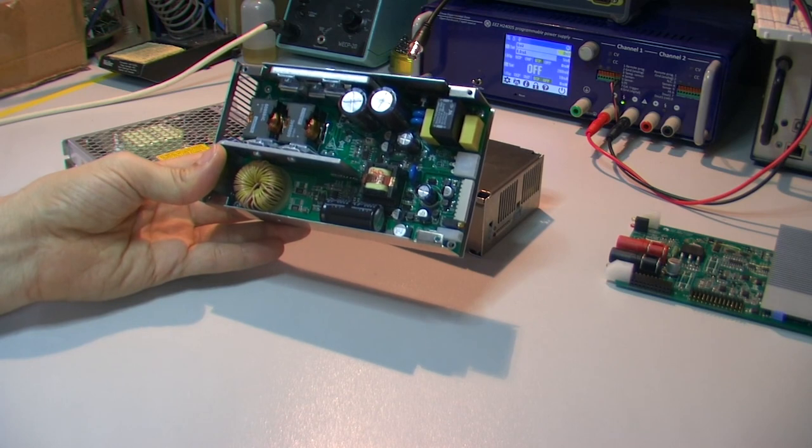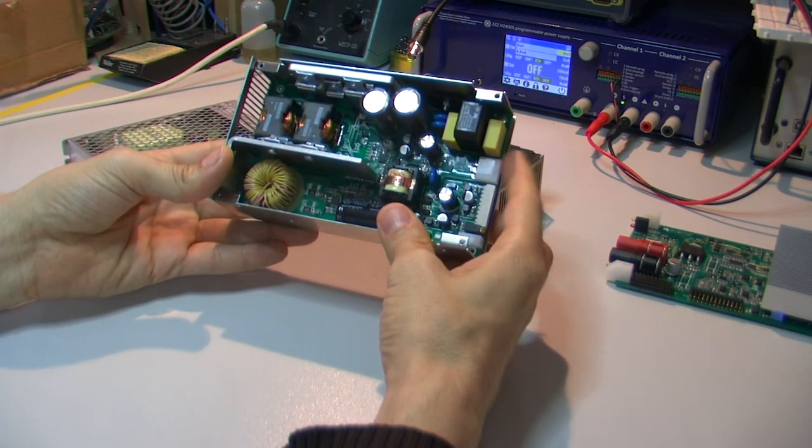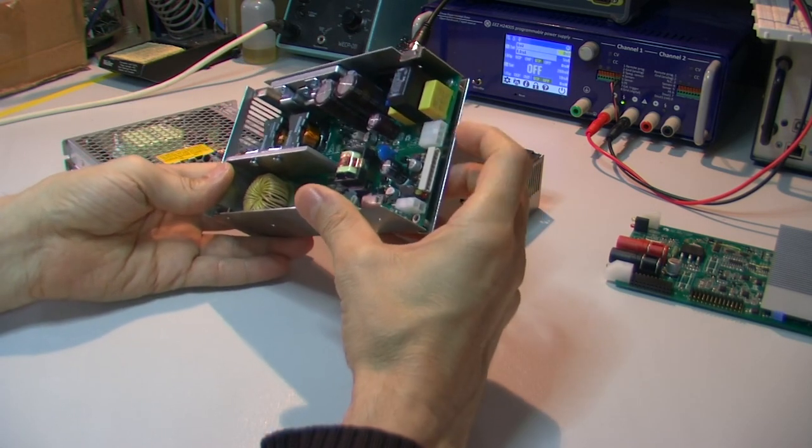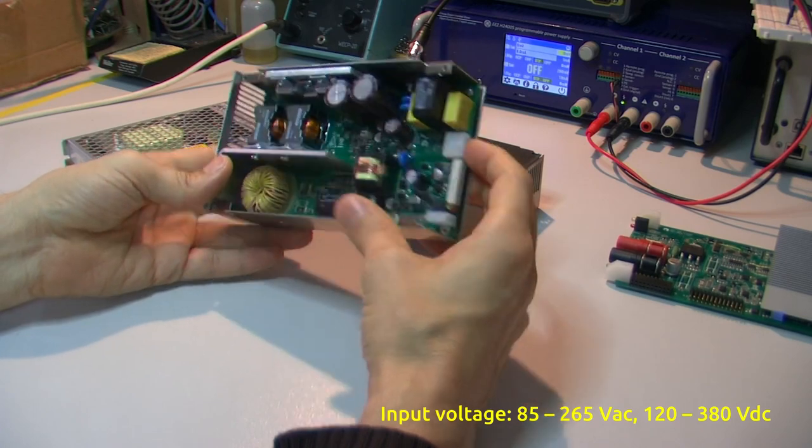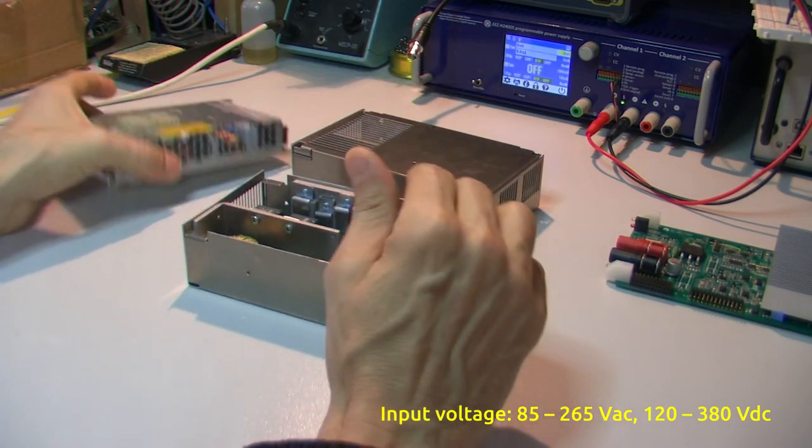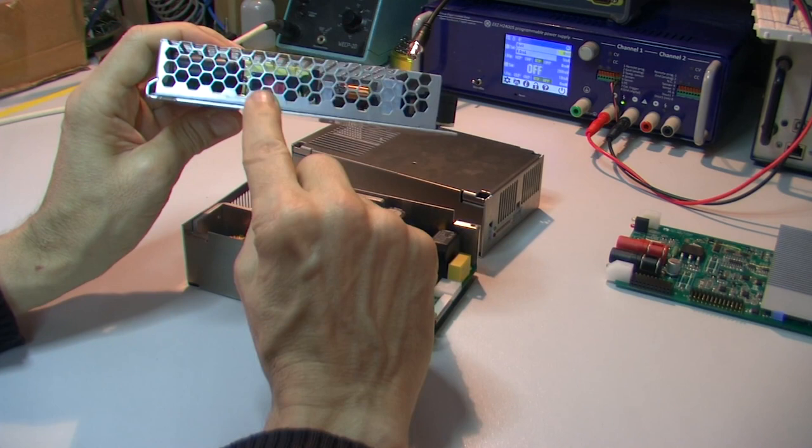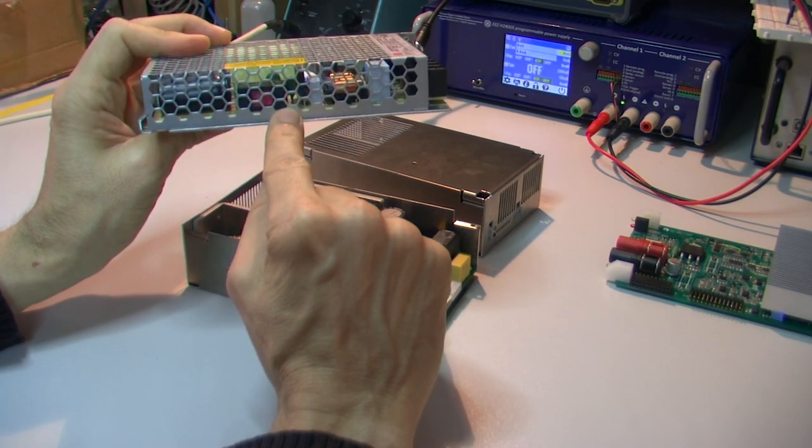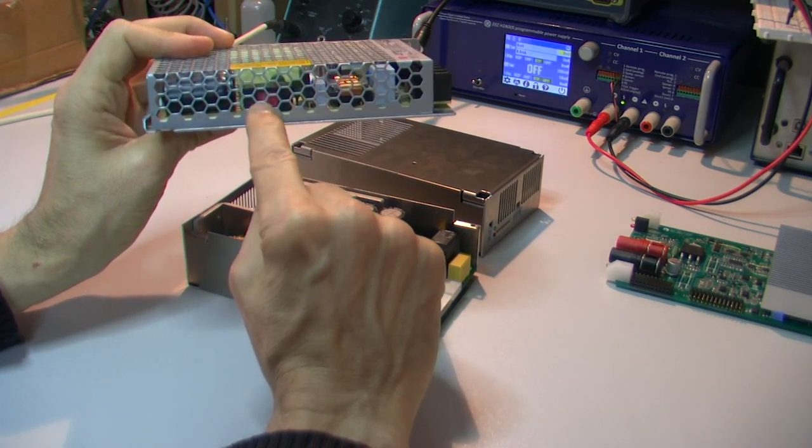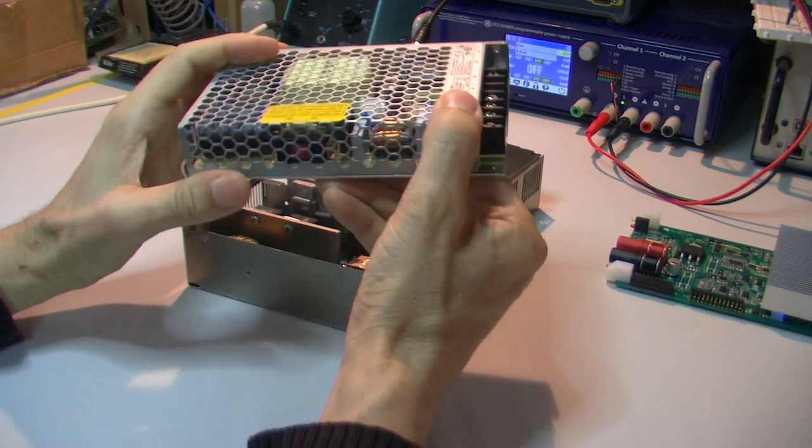This one is an auto switcher so that means it can accept wide input voltage range instead of previous one which require mechanical switch to switch between lower and higher AC mains voltage.